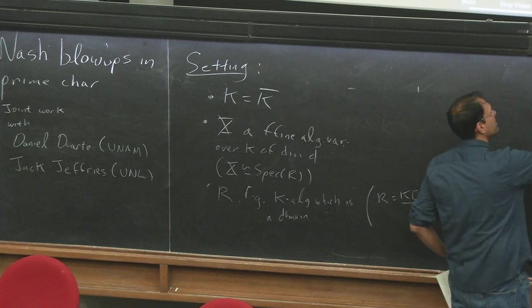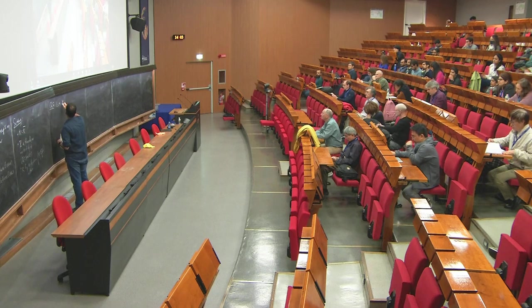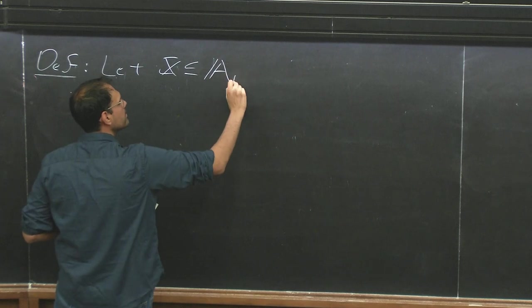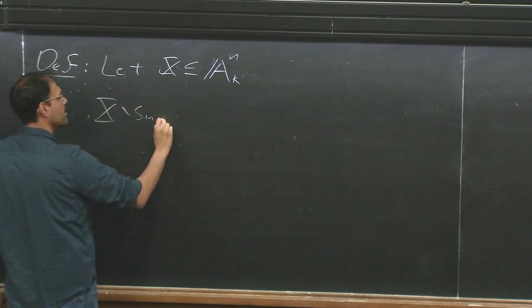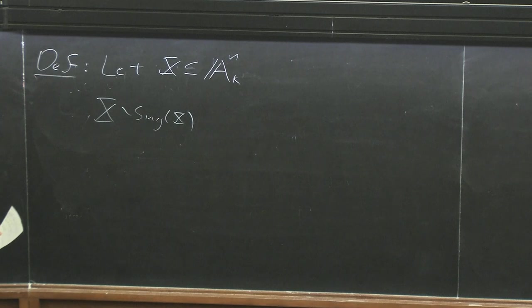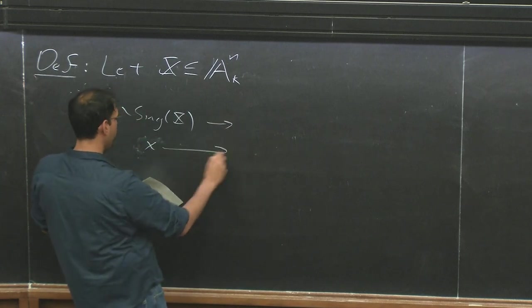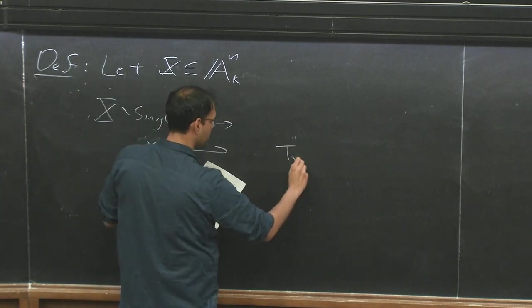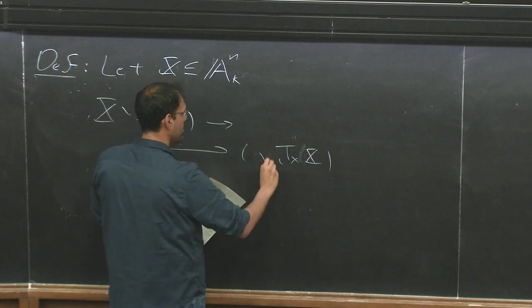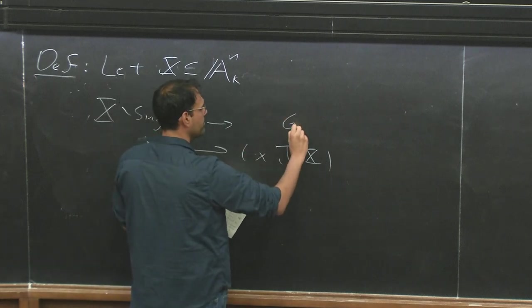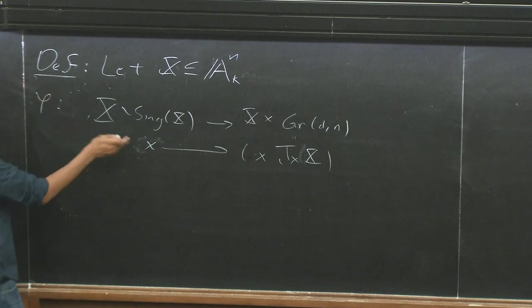So let me introduce the definition of the main protagonist. We consider X in the affine space. If I take any smooth points, then we're going to have a map for every x, little x, the tangent space is well defined, and it has dimension D. So I want this to lie in the Grassmannian. So this map is well defined as long as X is smooth.